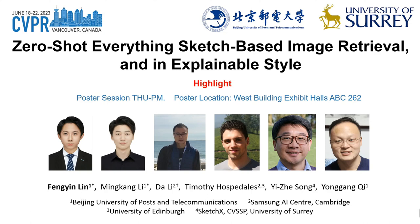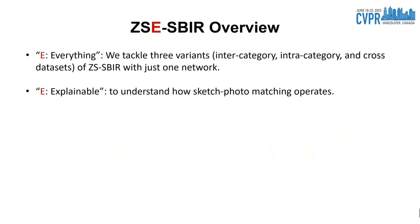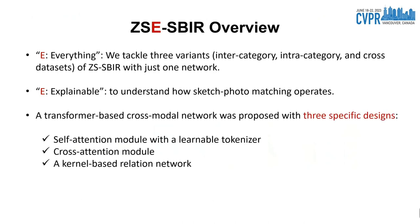I am Feng Yi Lin from Beijing University of Posts and Telecommunications. I'd like to introduce our paper, Zero-Shot Everything: Sketch-Based Image Retrieval in an Explainable Style. This paper studies zero-shot sketch-based image retrieval (zero-shot SBIR) with two significant differentiators. First, we tackle all variants of zero-shot SBIR, including inter-category, intra-category, and cross-dataset retrieval using just one network — we call this 'everything'. Moreover, we aim to understand how sketch-photo matching operates — we call this 'explainable'. Technically, a transformer-based cross-modal network was proposed with three specific designs tailored to the problem.